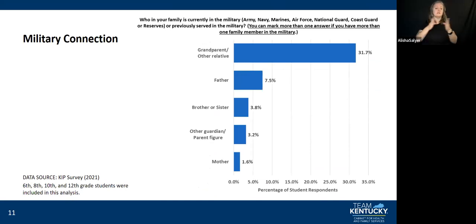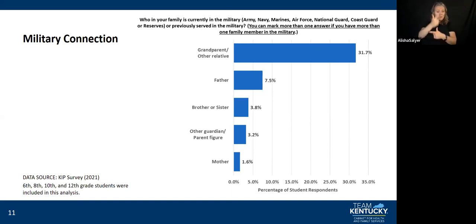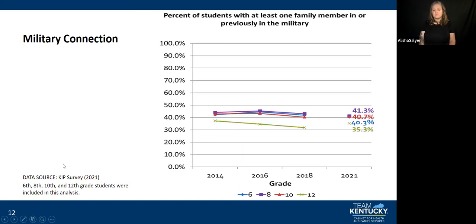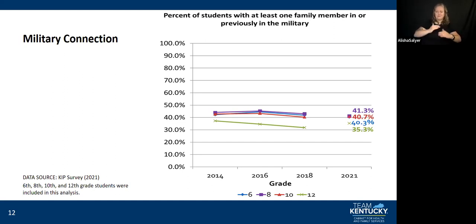For military connection — who in your family is currently in or previously served in the military? — 31.7% said grandparents or other relatives, 7.5% father, 3.8% brother or sister, 3.2% other guardian or parent figure, and 1.6% mother. The percent of students with at least one family member in or previously in the military ranges from 35.3% among 12th graders to 41.3% among 8th graders.